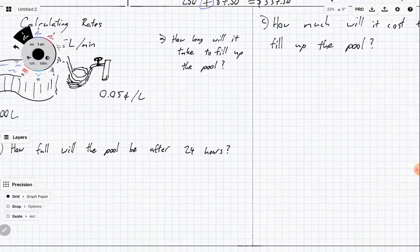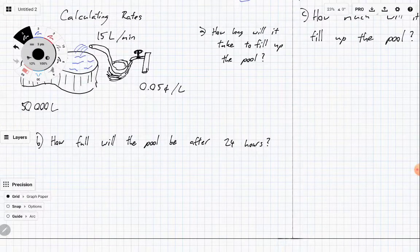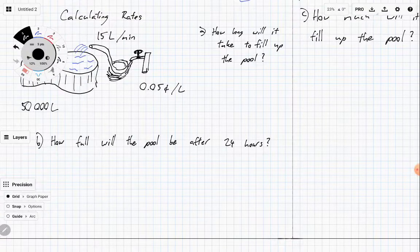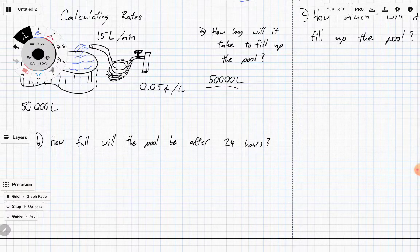So let's just do the first one. How long will it take to fill up the pool? Well, 50,000 litres, 15 litres per minute. So in one minute you're going to get 15 litres. In two minutes you're going to get 30 litres. So we're going to actually use division here to help. So 50,000 litres divided by 15 litres per minute, and that will give us how many minutes it'll take.